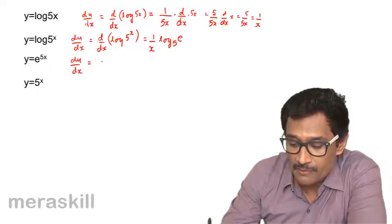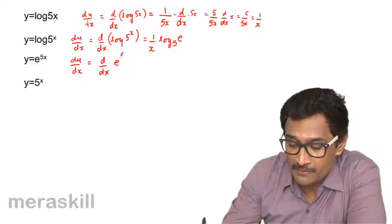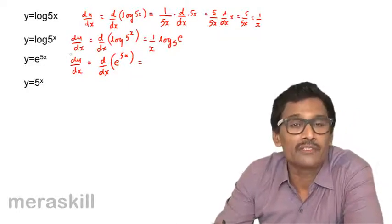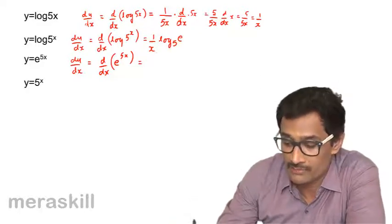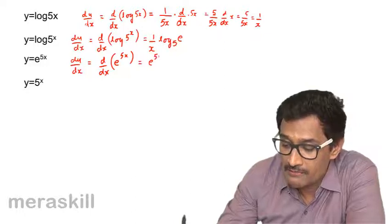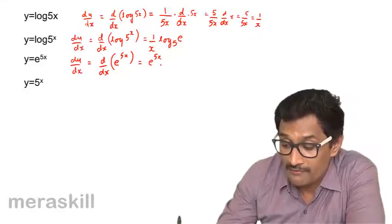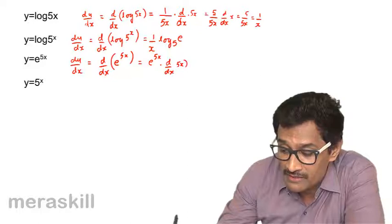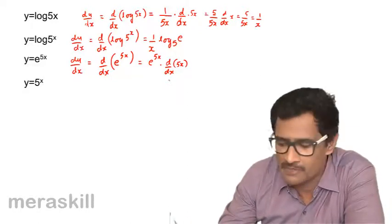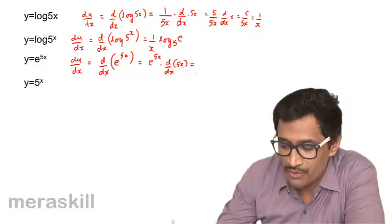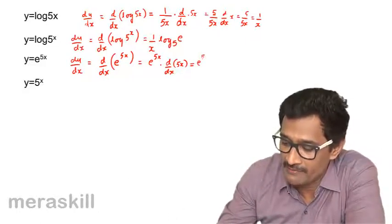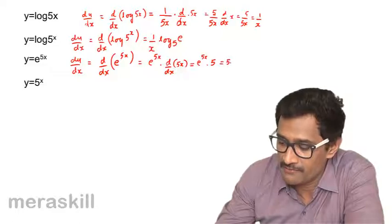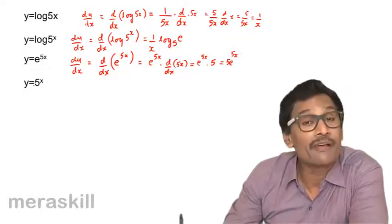Now, dy/dx of e^(5x): the rule is that d/dx of e^x = e^x itself, so d/dx of e^(5x) = e^(5x). However, 5x is itself a function of x, so we apply the chain rule and multiply by d/dx of 5x = 5. Hence the result is 5e^(5x). Candidates often forget this step initially, but with practice the chain rule becomes a natural habit.